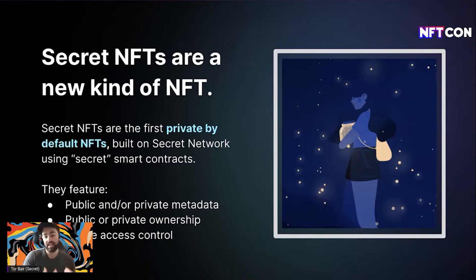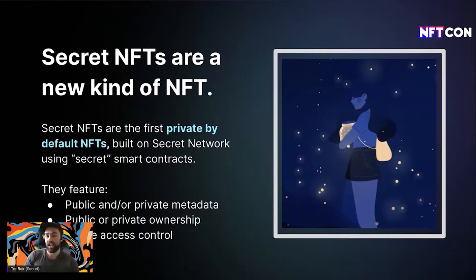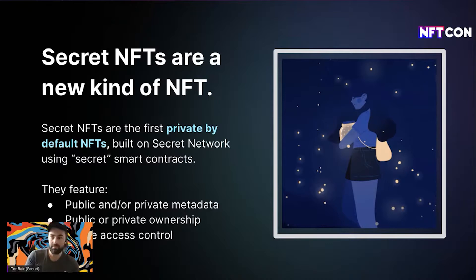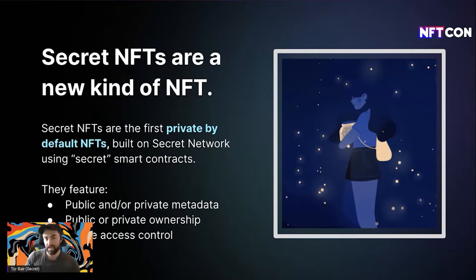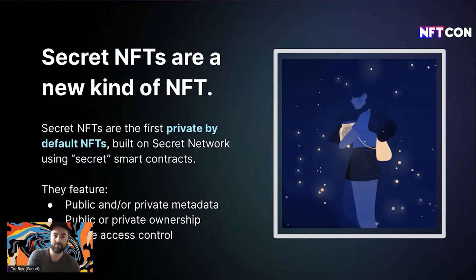Instead, we built a new kind of blockchain. Secret is private by default, meaning secret NFTs are private by default. Every smart contract deployed on Secret is a secret smart contract — you can use encrypted inputs, outputs, and the state of the contract is encrypted. So instead of being public to everybody, it is only public to the owner or a whitelisted set of addresses. You can still make everything public, but if something starts private you can always choose to make it public — the reverse is never true.